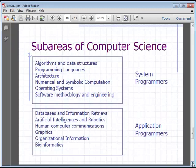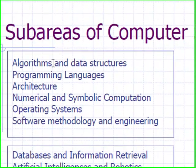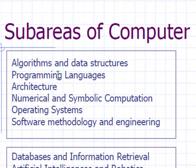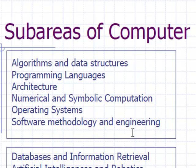In the system programmers area, we have people that do algorithms and data structures, programming languages, architecture — in terms of software — numerical and symbolic computations, operating systems, and software methodology and engineering. Those are the system programmers, and these are the people that write the tools that other people use.